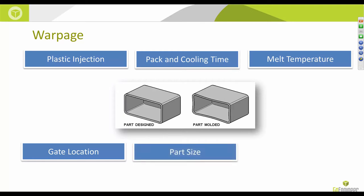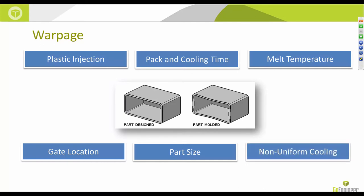Part size is a two-part problem. The cardinal rule of plastic part design is uniform wall thickness — any non-uniform wall thickness creates non-uniform shrinkage that causes warpage. Second, if parts are too thin, those thin areas have a tendency to deform when ejected from the mold cavity. Finally, non-uniform cooling — which we'll delve into — is the influence of the mold itself on part warpage.